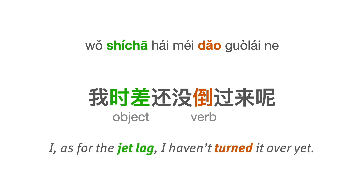You might think of it as: I, as for the jet lag, I haven't turned it over yet. 还没倒过来呢. So here the word 过来 translates to 'over.'